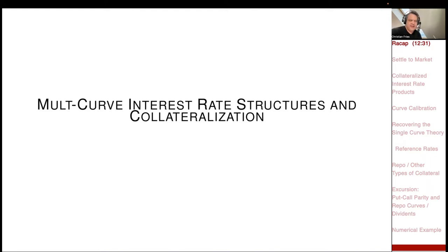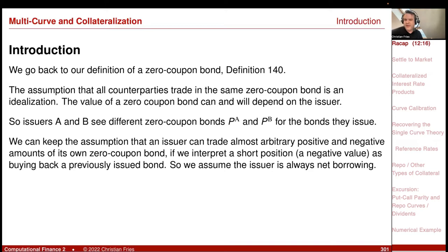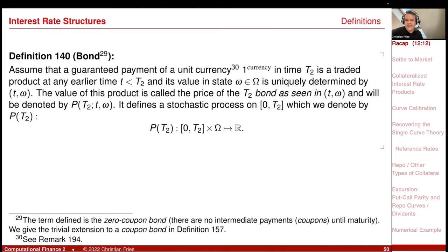We started with a very frightening observation: the whole interest rate theory we did is wrong, because the basis — our definition of a zero-coupon bond, our idealized product — the assumption that everybody can trade in this zero-coupon bond, which is the guaranteed payment of one unit at a future point in time, this assumption is wrong.